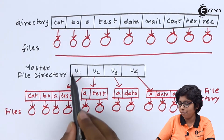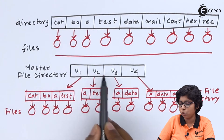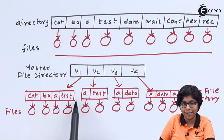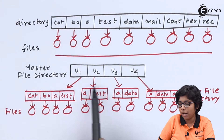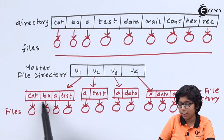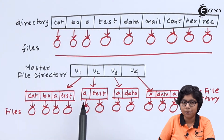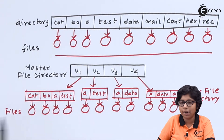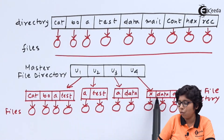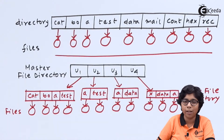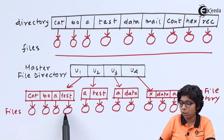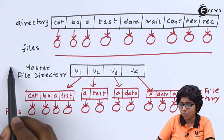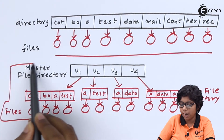Here we can see a master file directory with four users: u1, u2, u3, and u4. User u1 has a user file directory with directories cad, bo, a, and test. User u2 also has directories named a and test — the names are common but the files are actually different. The file name can be duplicated across users, but within each UFD, no duplicate names are allowed. User u3 contains a data directory and u4 contains data, a, and another directory x. All directories contain the actual files in the physical file system, forming a two-level directory structure.